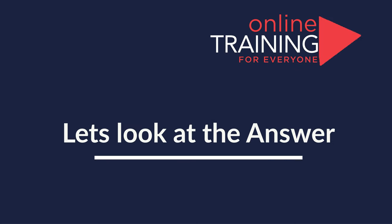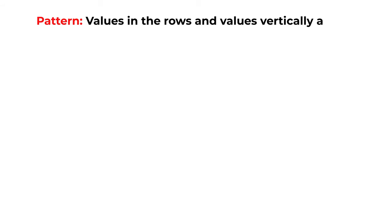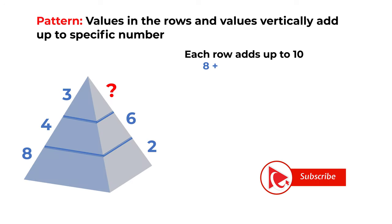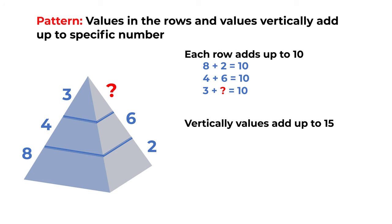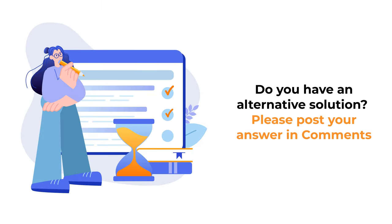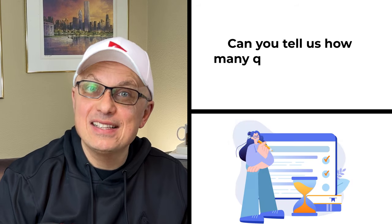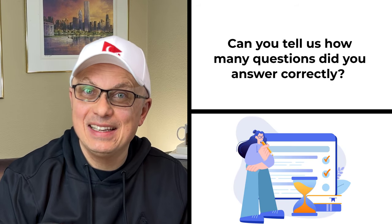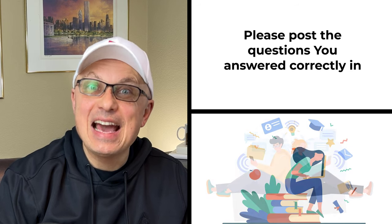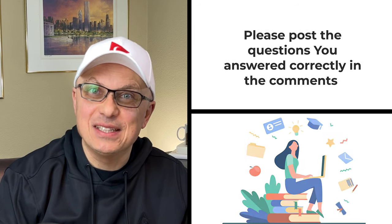As you might have figured out, the key to solving these types of challenges is to always look for patterns. If you look closely, each row adds up to 10, and vertically values also add up to 15. So the correct answer is choice C, 7. Hopefully you nailed this question and now know how to answer similar problems on the test. Post in the comments how many questions you answered correctly.